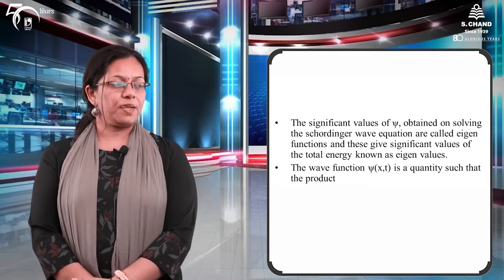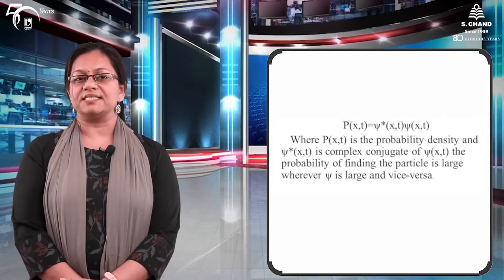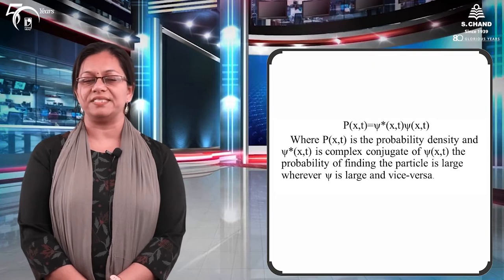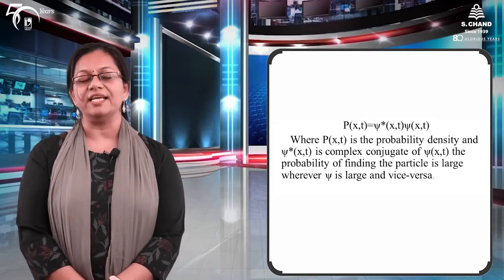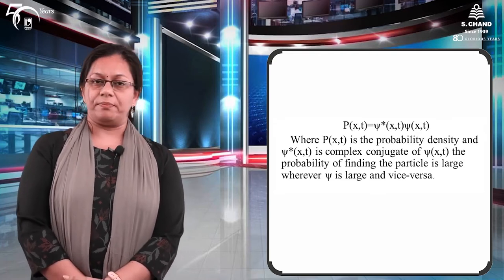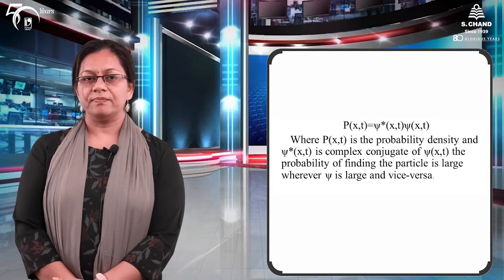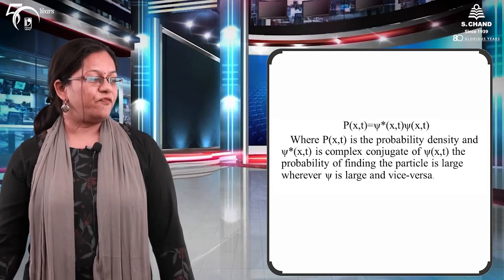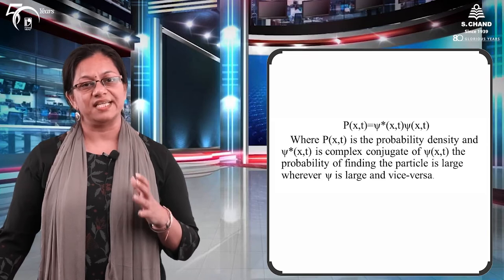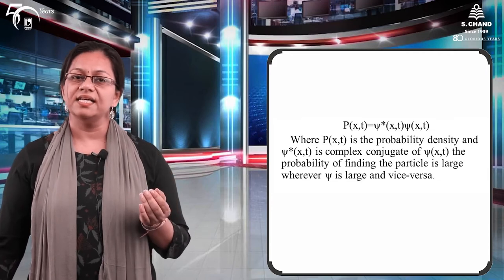Chi is the wave function over x and t. The product P(x,t) is given by chi into chi-star, where chi-star is the complex conjugate of chi. P(x,t) is the probability density. Probability of finding the particle is large when the value of chi or the wave function is large. Chi bada hoga toh probability zyada rahegi; chi ki value kam hogi toh probability bhi kam hogi.